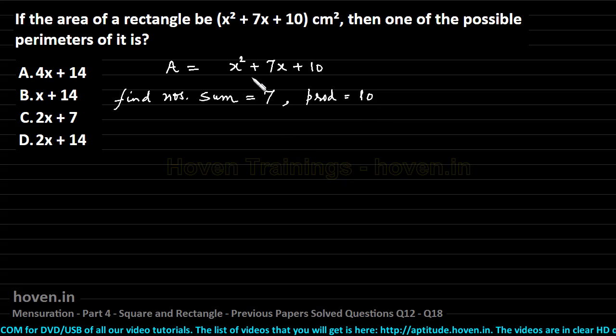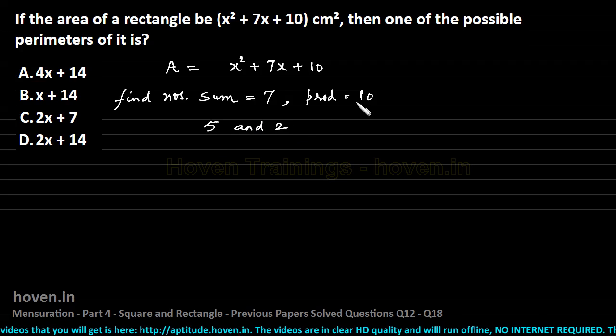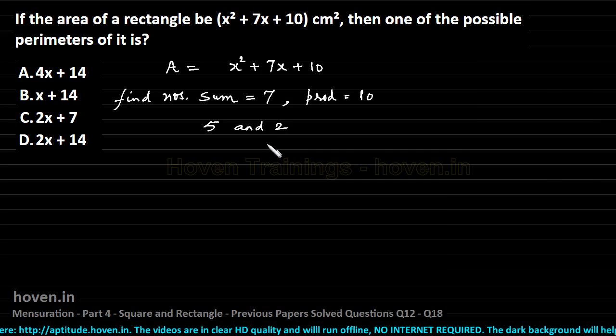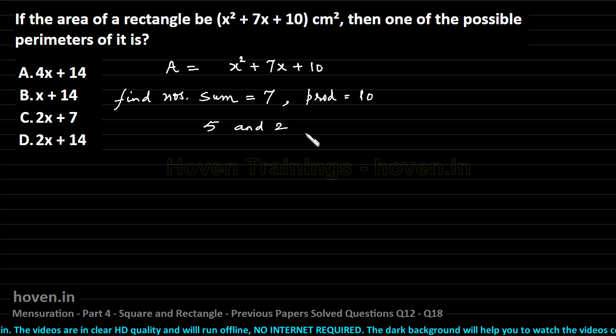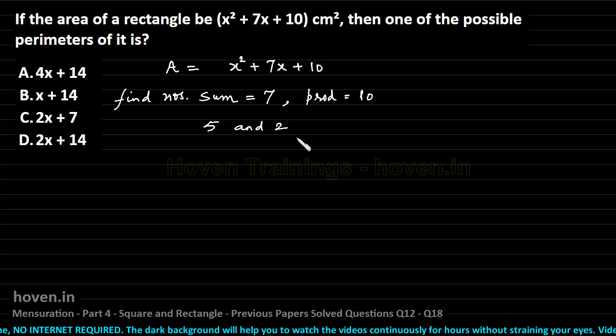Once we are able to find them we will be able to factorize it and we can simply guess those two numbers as 5 and 2. 5 into 2 is 10 and 5 and 2 is 7. In case you are having a problem with this factorization, go through my videos on factorization where I have given detailed analysis of everything from the simplest possible cases to the most complicated cases. I have always given extensive coverage to every topic in all my videos.